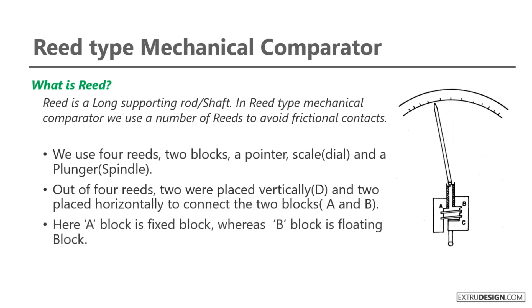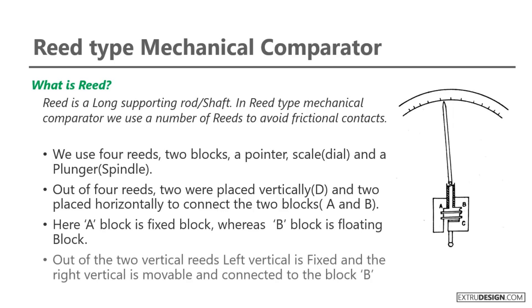Here, A block is fixed block, whereas B block is floating block. Out of the two vertical reeds, left vertical is fixed and the right vertical is movable and connected to the block B. To know more about the reed type mechanical comparator, check the link in the description.